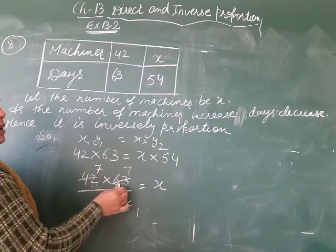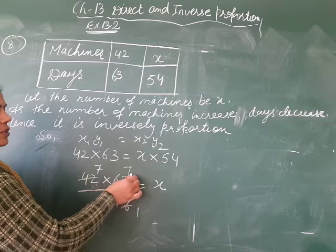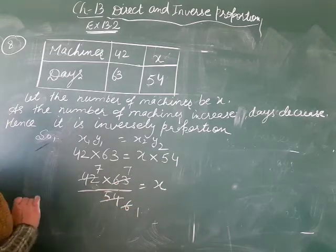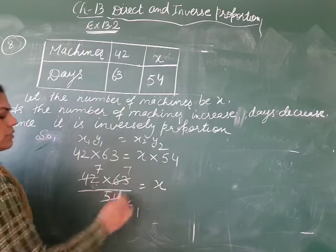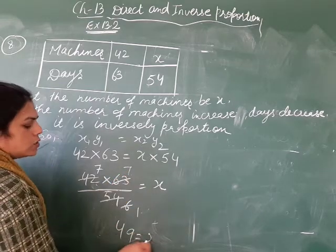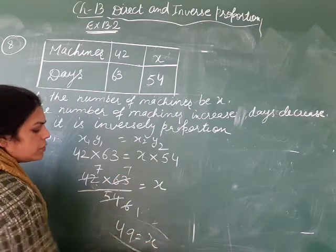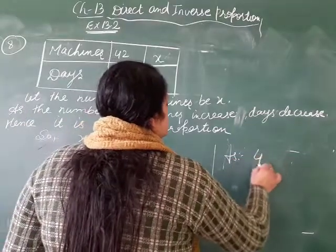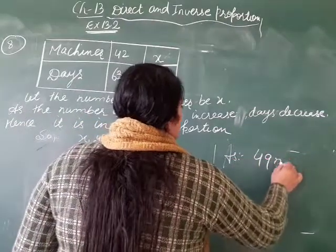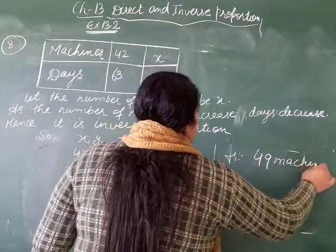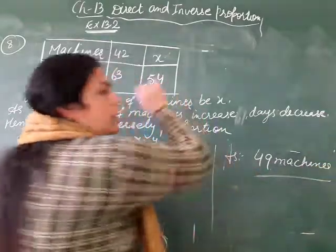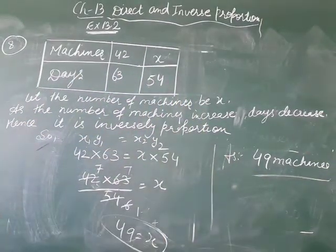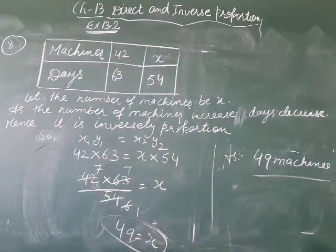First: 9 × 7 = 63, 9 × 6 = 54, 6 × 1 = 6, 6 × 7 = 42, 7 × 7 = 49. So how many machines would be required? 49 machines. So 49 machines are required to finish the work in 54 days. Clear? Yes ma'am. Thank you.